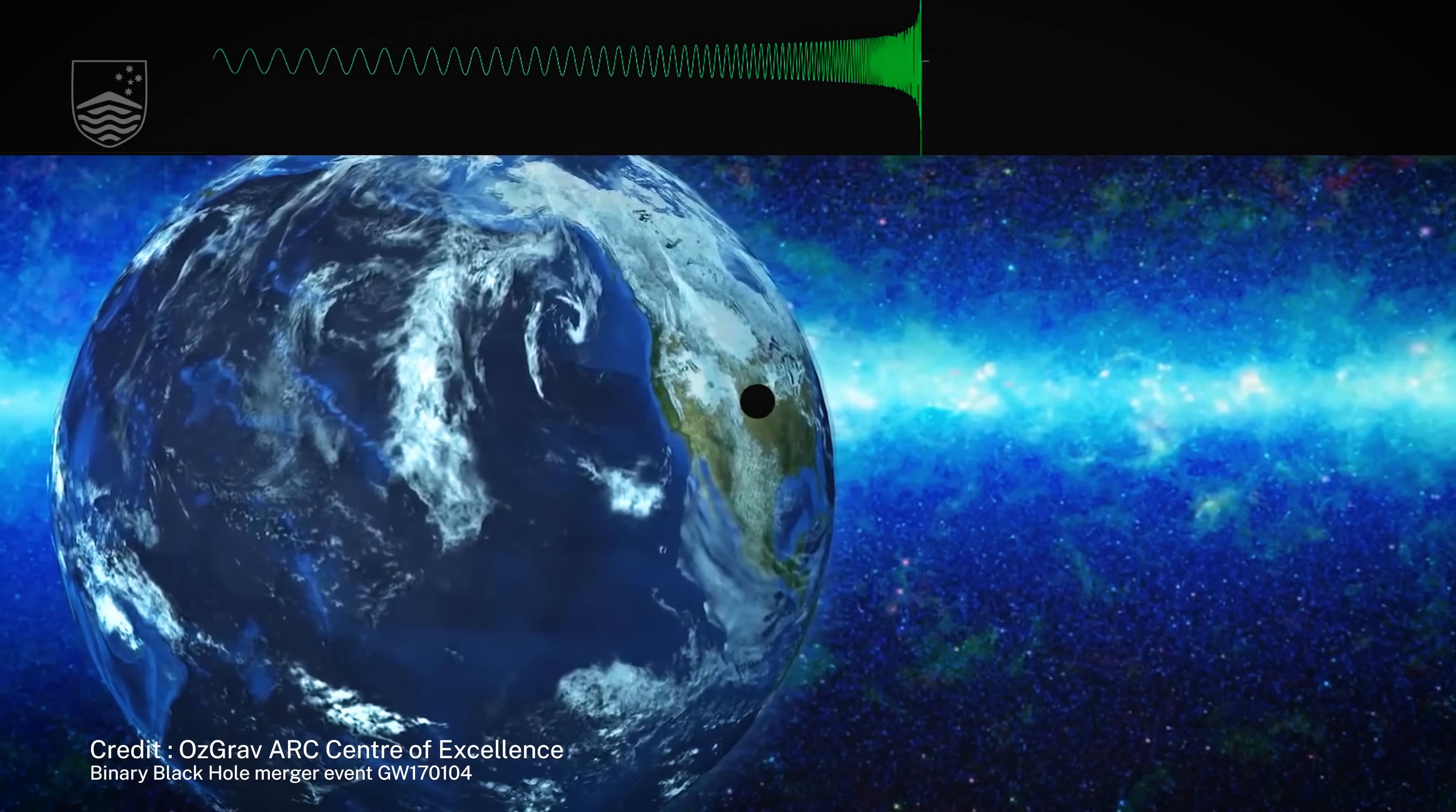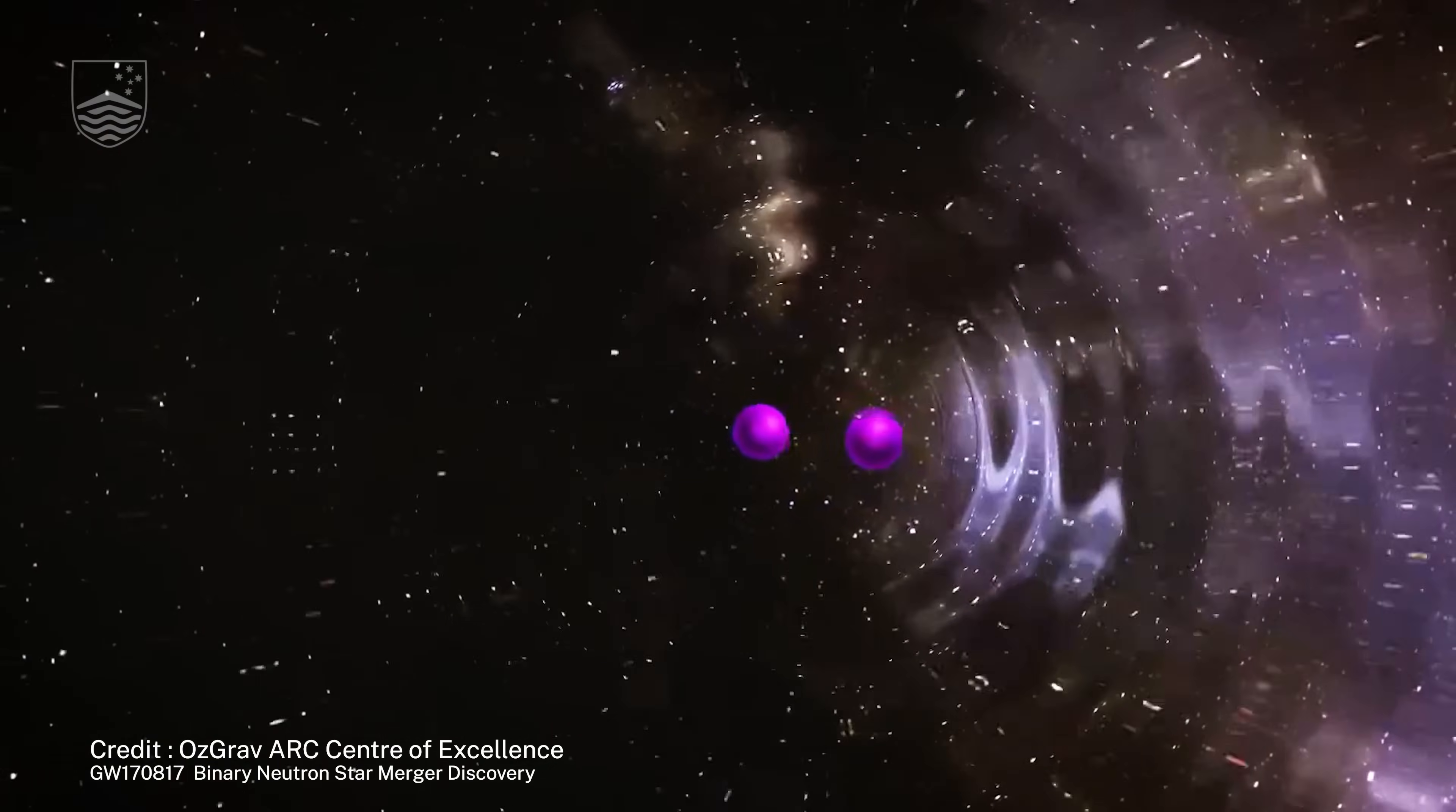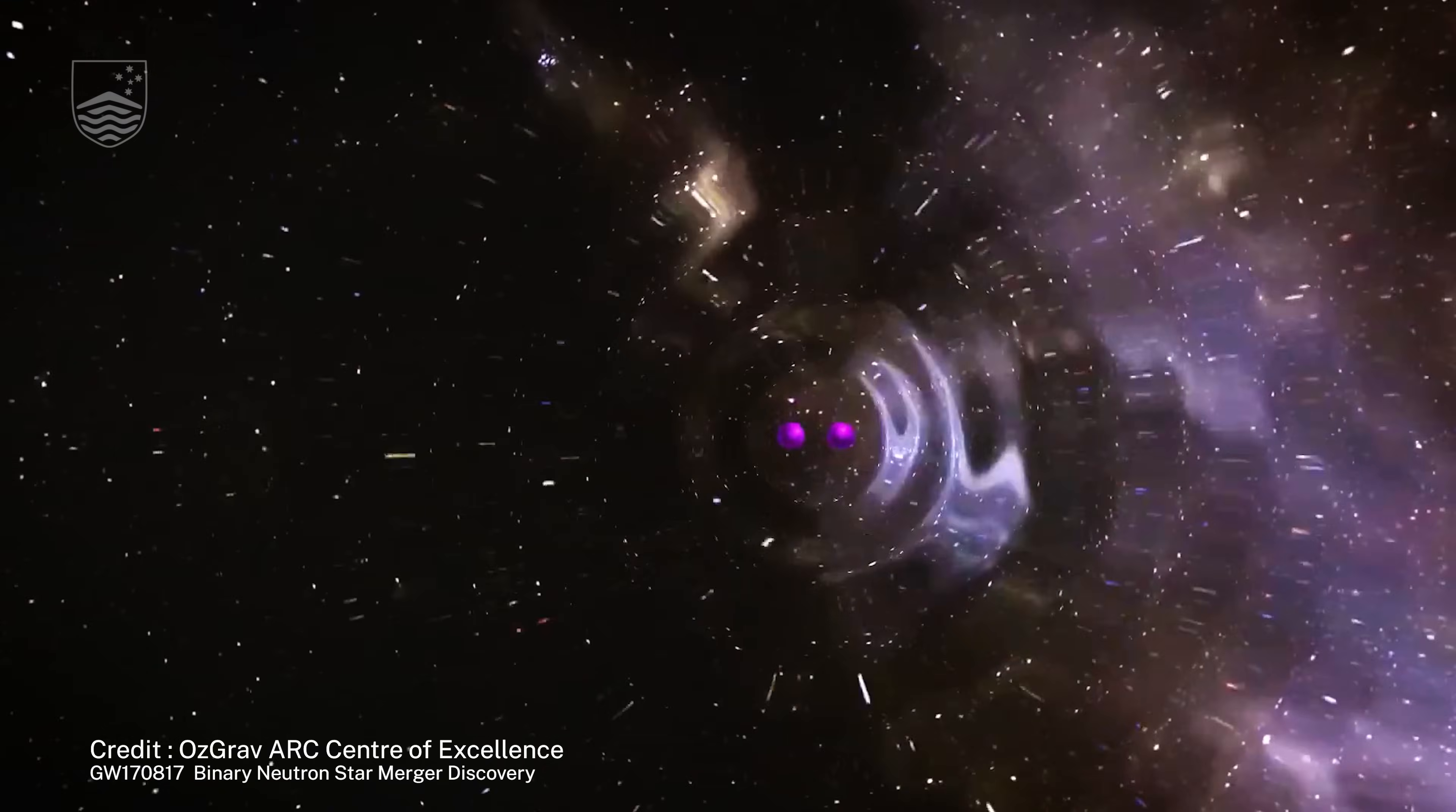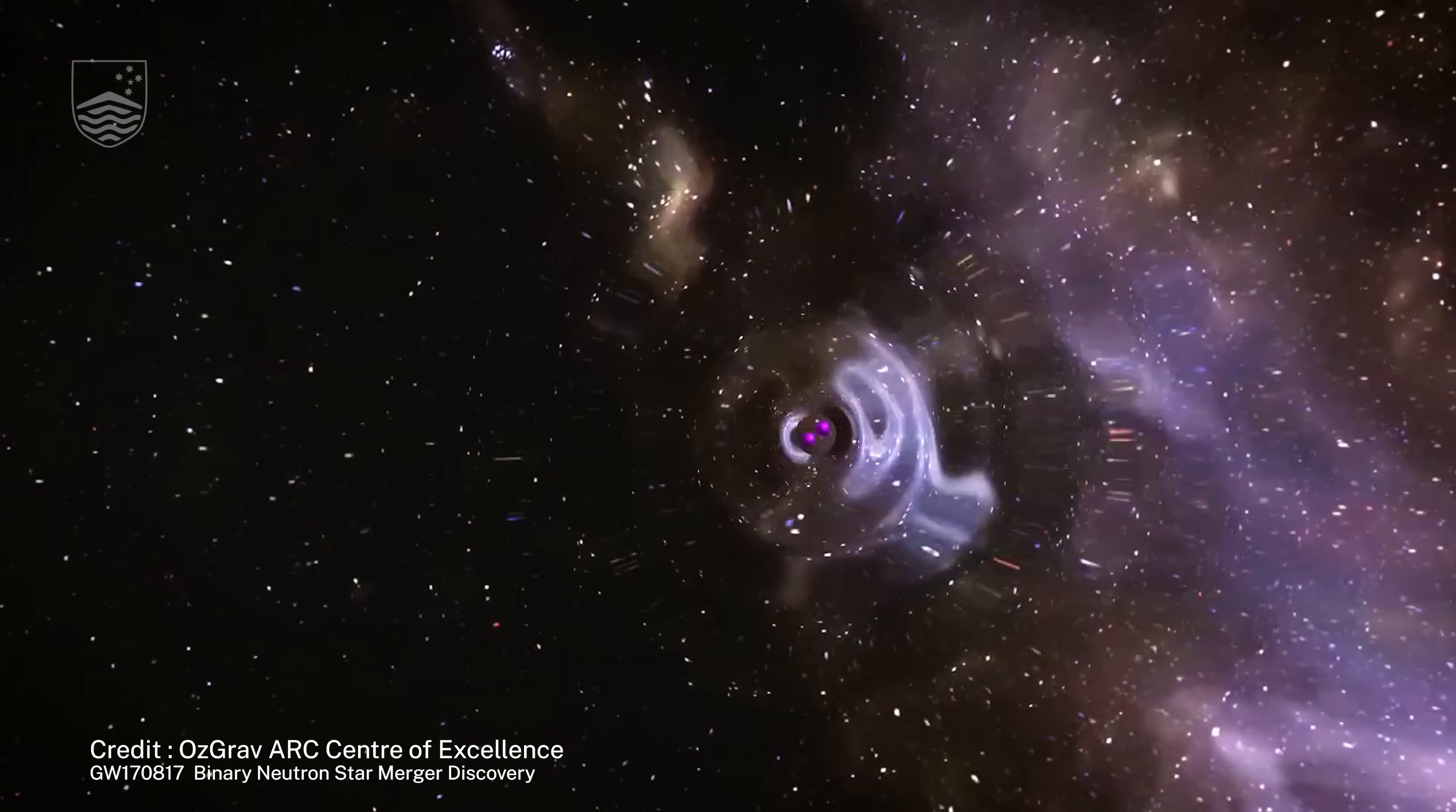You can imagine if those very massive compact objects like black holes and neutron stars are moving and orbiting each other, they trigger the ripples in space-time that spread out traveling at the speed of light.